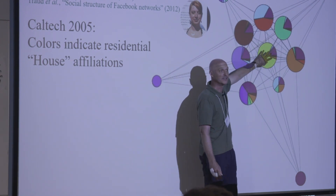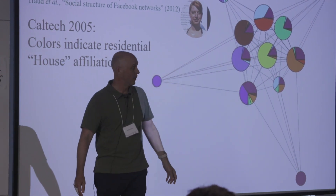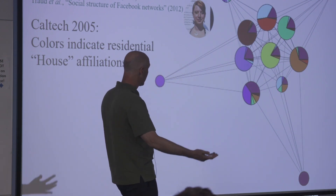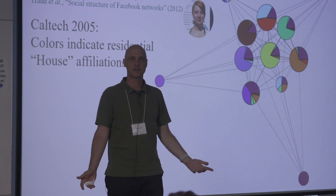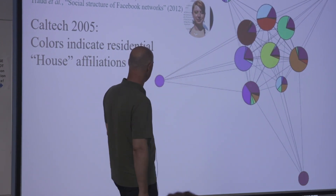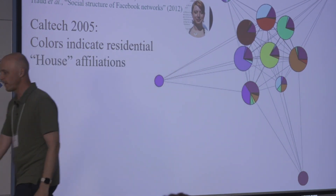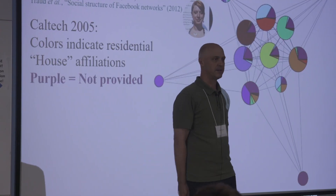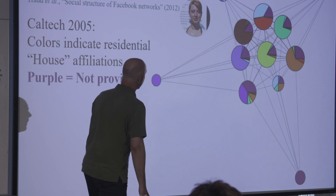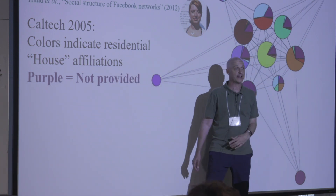This little Pac-Man looking thing is a particular house they were interested in. For the most part, in the very large communities, the house assignments make sense — with the exception of one color, purple, which seems rather well distributed across the communities. The purple nodes are simply the people who didn't say on their Facebook page which house they were affiliated with. So simplest data imputation problem ever solved — if I'm throwing a party for Lloyd House, I'm certainly inviting everybody in the purple wedge.